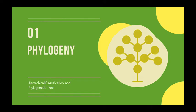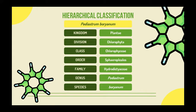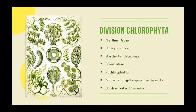Let's first discuss the hierarchical classification and phylogeny of P. boryanum. P. boryanum is from the kingdom Plantae, division Chlorophyta, class Chlorophyceae, order Sphaeropleales, and family Hydrodictyaceae. Each of these taxa shall be discussed briefly.